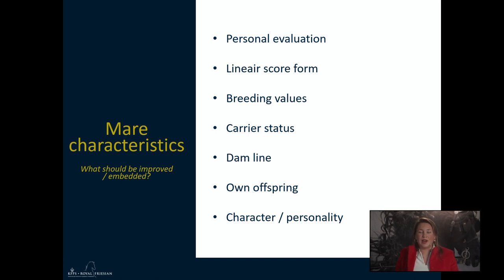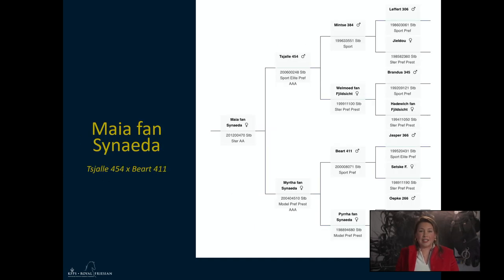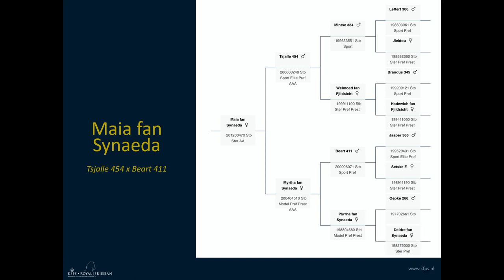Today I will take you through my process of choosing a stallion for my mare with the help of the KFPS site. I'd like to introduce my mare: she's called Maia van Sineda, a Tjalla Kierbeerd mare. She's a second premium mare with an AA register, so she has done an eye test. Her pedigree is shown on screen. She is a daughter of Myrtha van Sineda, who is a model mare — prevalent and also a prestatie. Myrtha is again a daughter of Pira van Sineda, also a model mare. It's a predicate-rich pedigree. Tjalla 500 is also from this line.